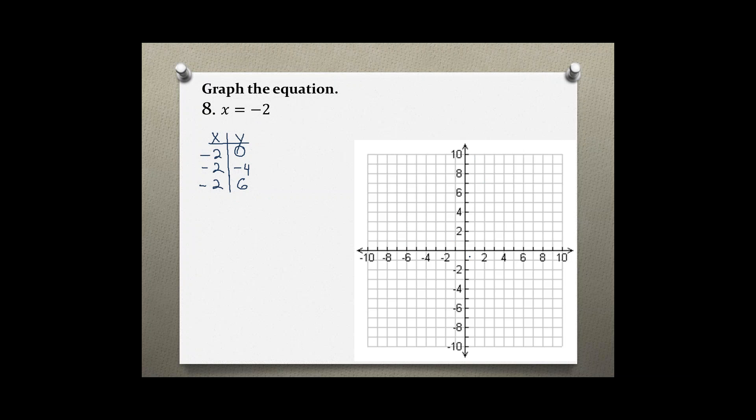So plotting the first point on the x axis, negative 2 and 0 on the y would be right here. The second point, negative 2 and negative 4 is right here. And negative 2 and 6 would be right here.